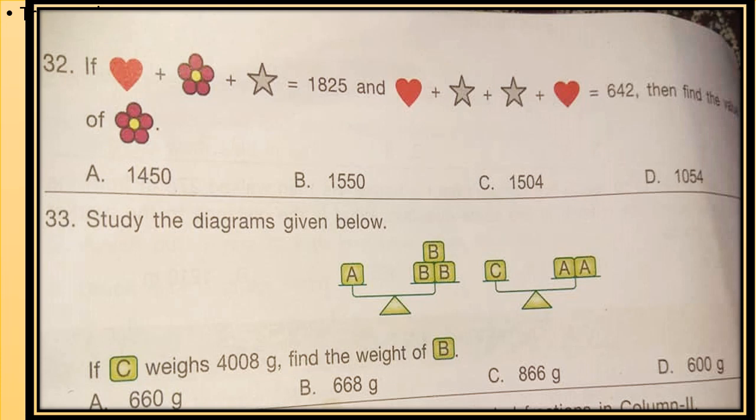There are two questions in this picture. First is if heart plus flower plus star equals to 1825 and heart plus star plus star plus heart equals to 642, then find the value of flower. There are two equations given. We have to solve the equation and find out the value of flower. From second equation we will get the value of heart plus star and we will substitute that value in equation 1 to get the value of flower.